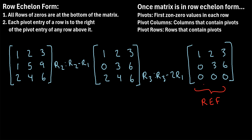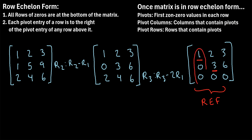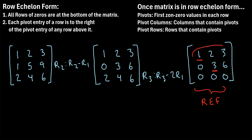We'll abbreviate it REF, because it meets the criteria: rows of all zeros are at the bottom, and each pivot entry — the first non-zero value in each row — is to the right of every pivot entry above it. The pivots are the first non-zero values in each row. In the first row, the first non-zero value is our first pivot. In the second row, the first non-zero value is also a pivot. The last row is all zeros, so there are no pivots there. So we have two pivots: the one and the three. The pivot columns are column 1 and column 2, and the pivot rows are the first row and the second row.